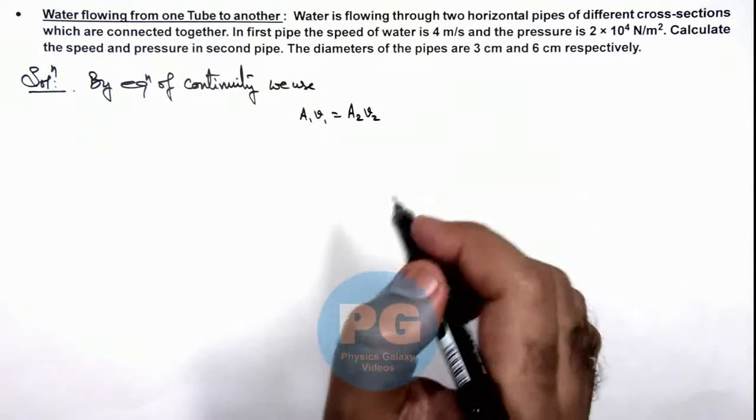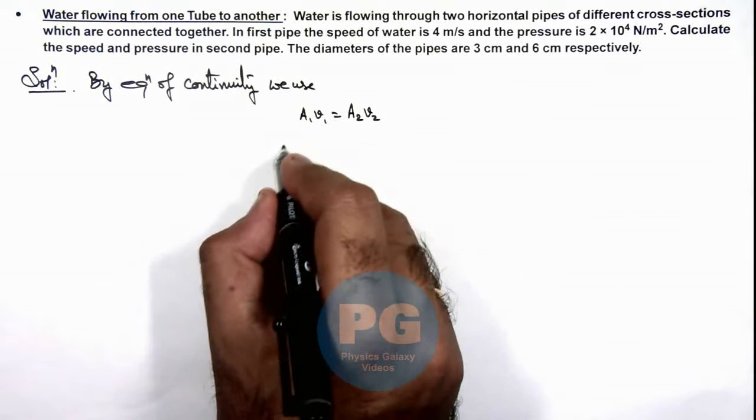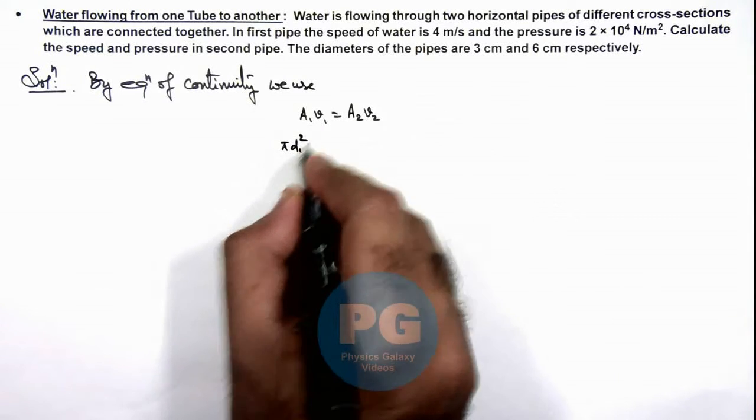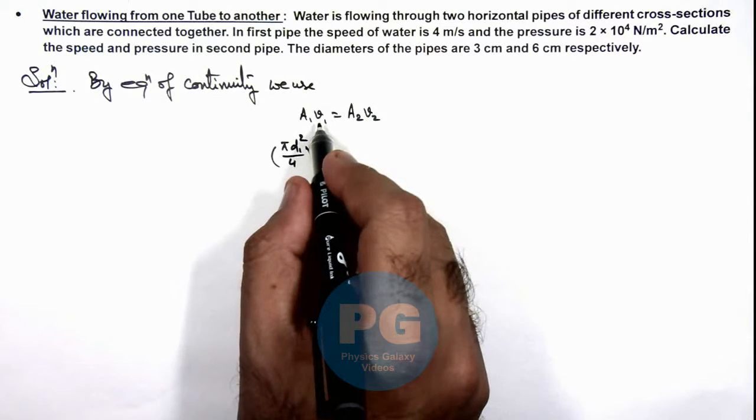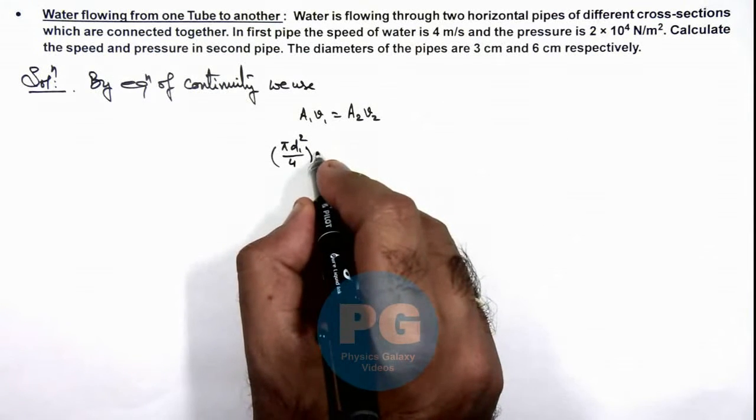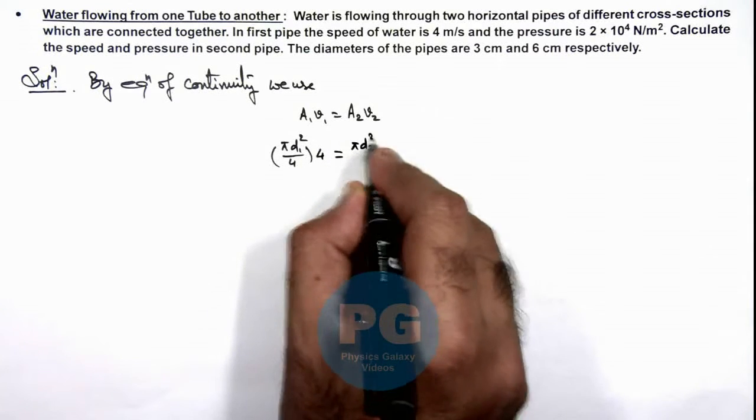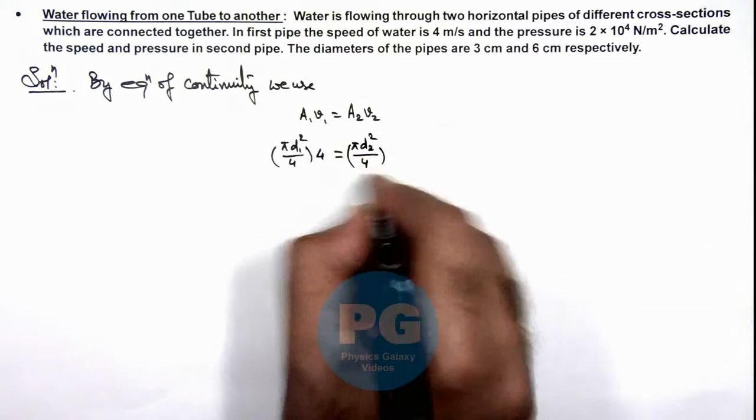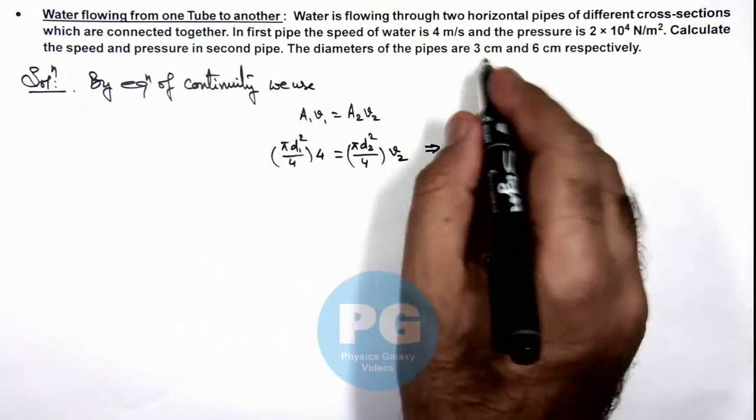For the first pipe, if we use the cross-sectional area, this will be πd₁²/4 multiplied by the speed which is given as 4 meters per second, should be equal to πd₂²/4 multiplied by v₂. So if we substitute d₁ and d₂ as 3 and 6...